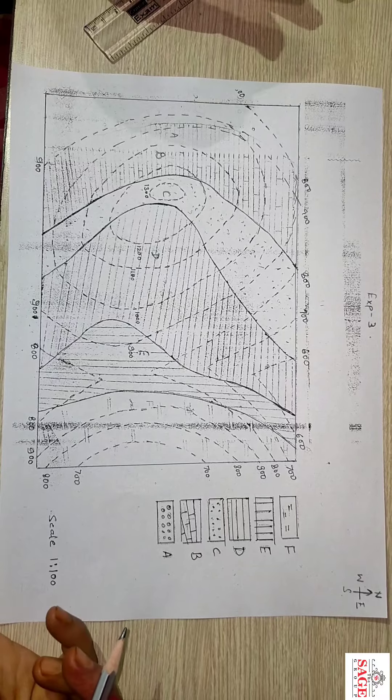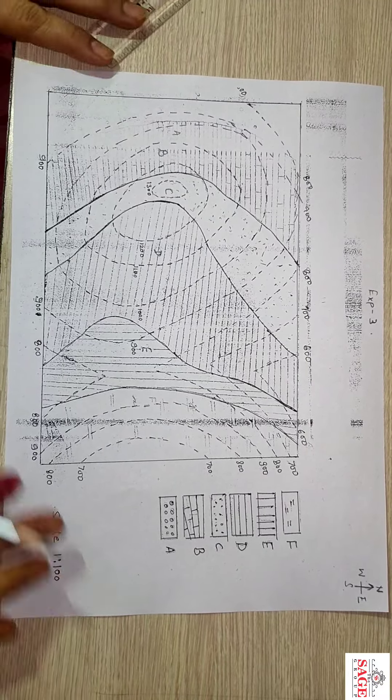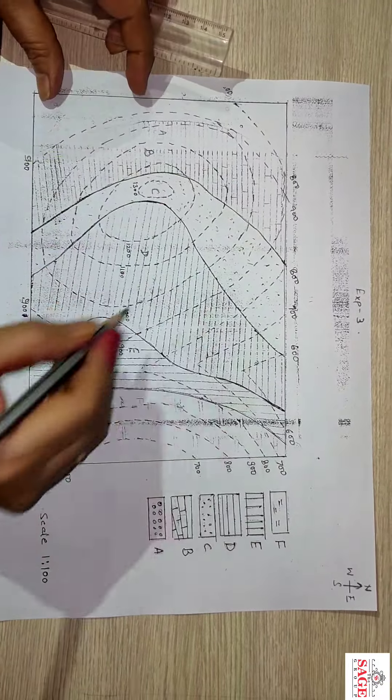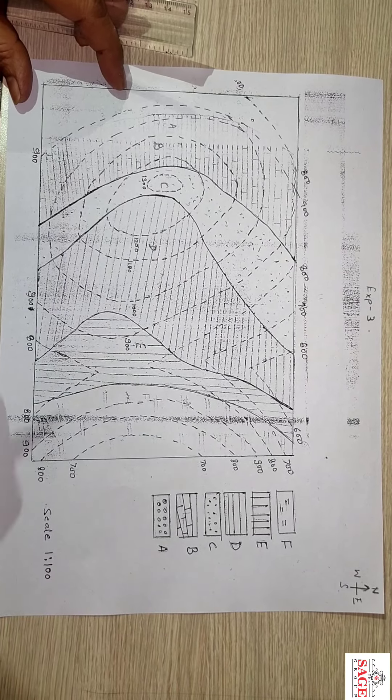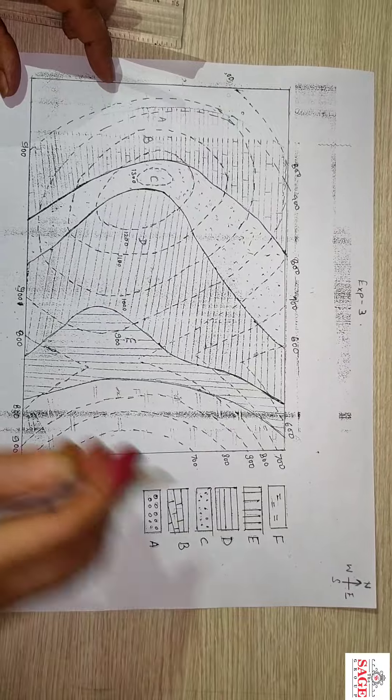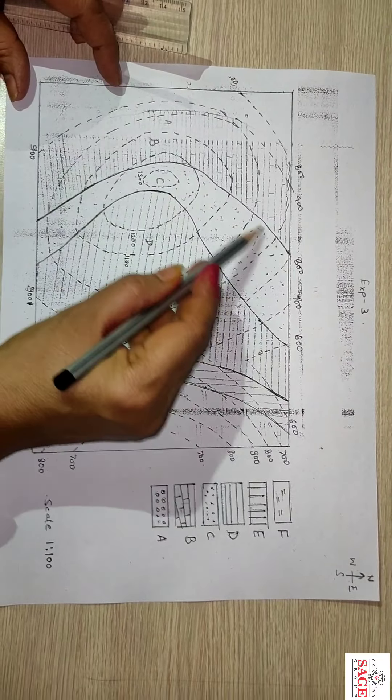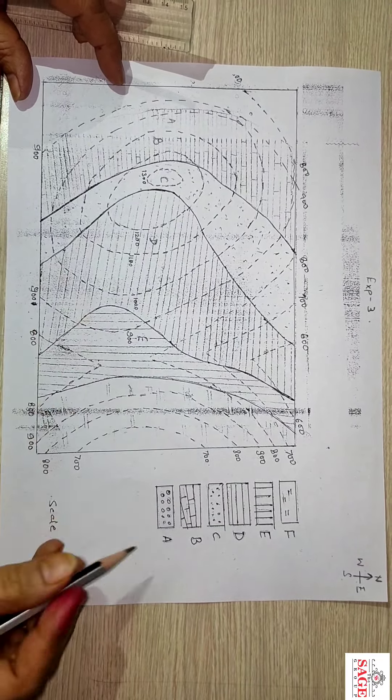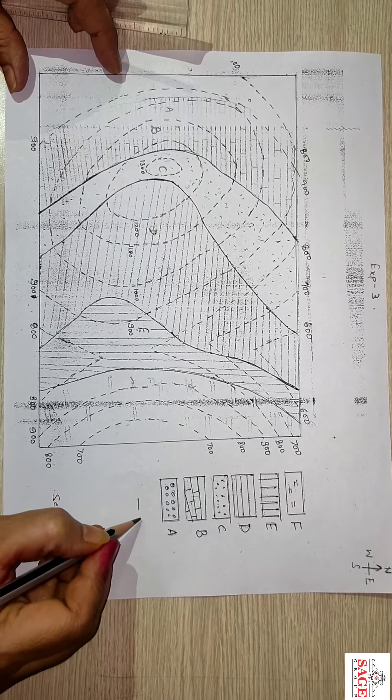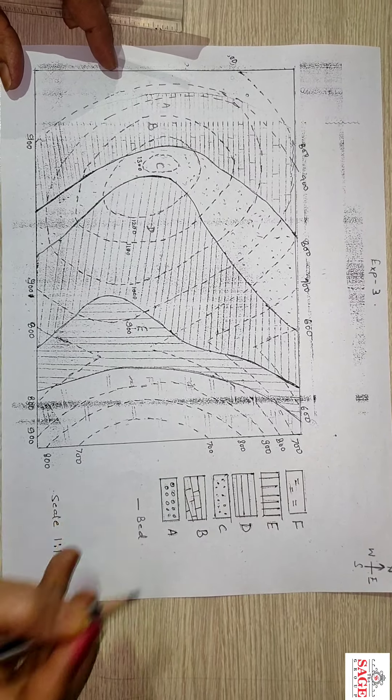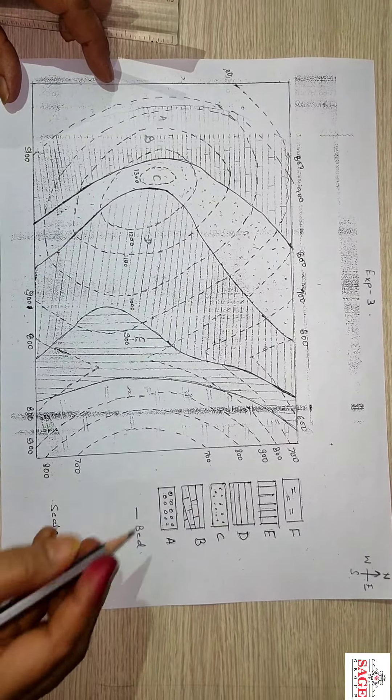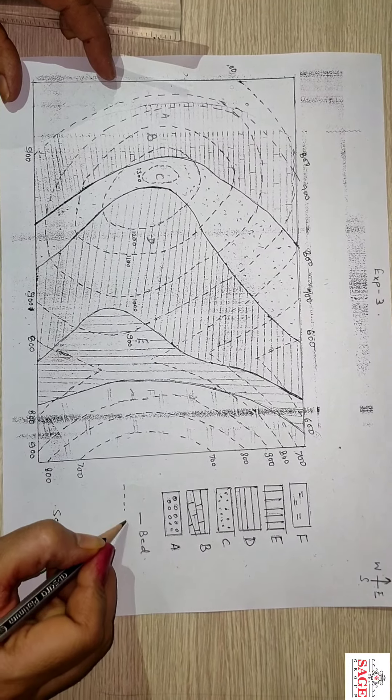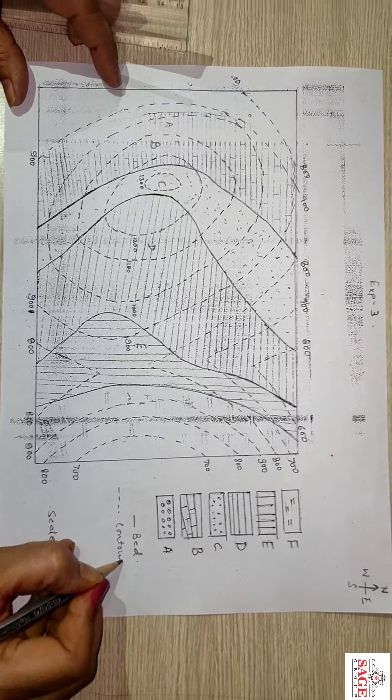Now let us prepare this map. What do you have to do? First, you have to mark the north and afterward, these straight lines are beds. You can write here. And these dotted lines are known as contours.